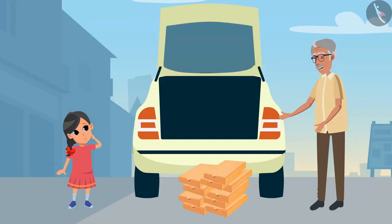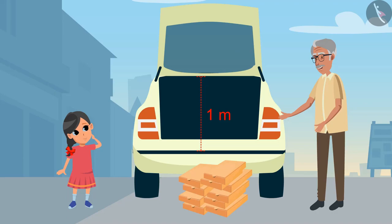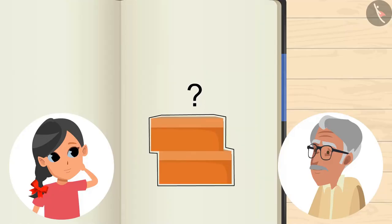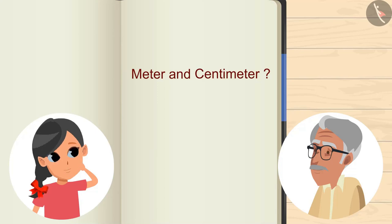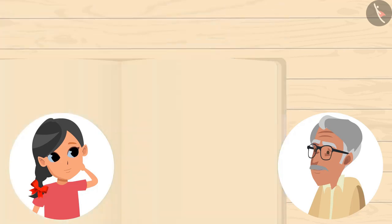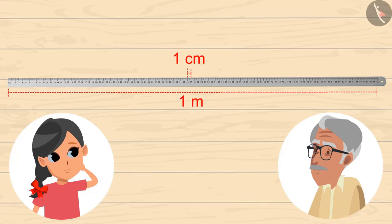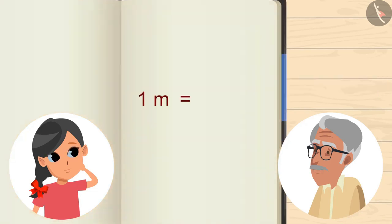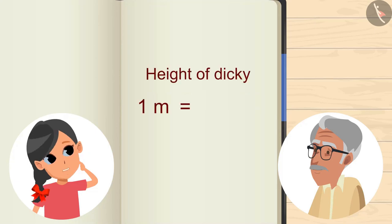So before eating the mangoes, tell me one thing. We have to place these 10 boxes in the car's dicky. The height of each box is 15 centimeters and the height of the dicky is one meter. How many boxes can be stacked on top of each other? Grandpa, what is meter and centimeter? These are measuring units. See, this is one centimeter — it is so small! And this is one meter — it is so huge! Yes, one meter means 100 centimeters.